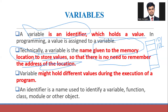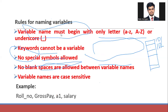Each and everything in Python should be named — it should be identified with the variable, the function, the class, module, or object. Everything should be identified in Python. Now we'll move on to the next slide: rules for naming variables.